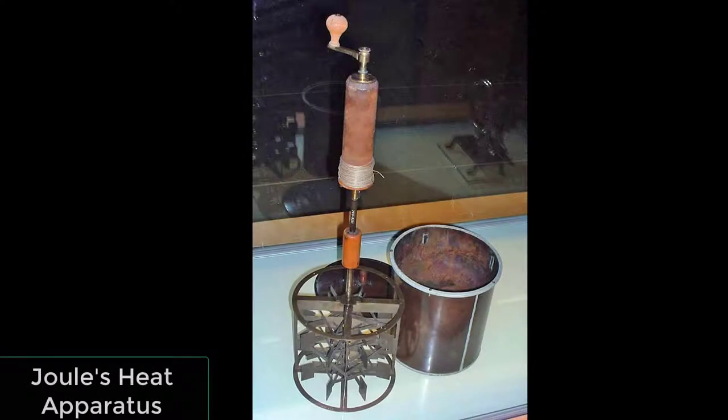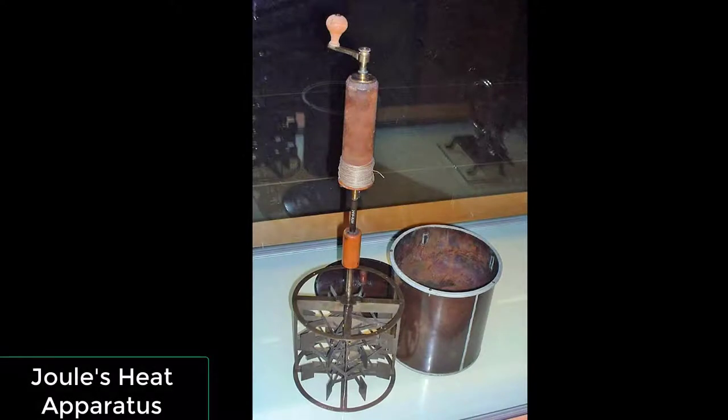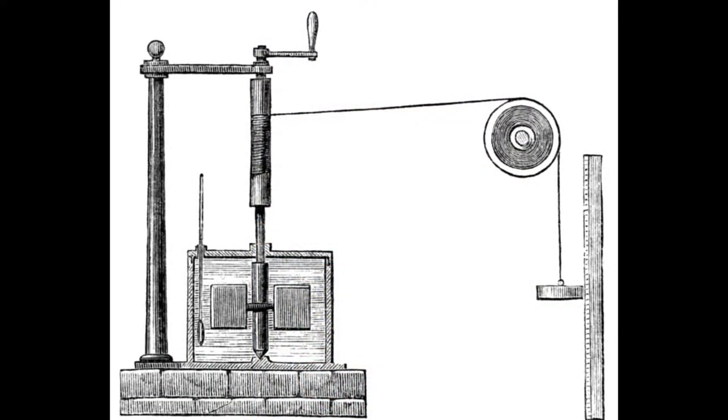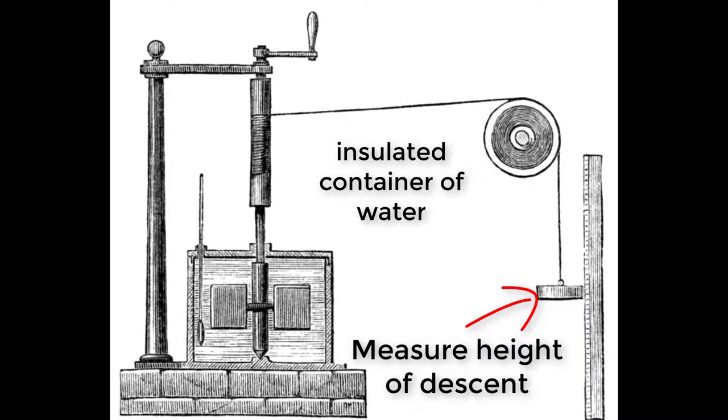Joule began his experiments in a laboratory in the family home. In 1841, he worked out how much heat an electric current generates. He experimented with converting mechanical movement into heat, and developed an experiment in which a falling weight turns a paddle wheel in water, heating the water. By measuring the rise in temperature of the water, Joule was able to work out the exact amount of heat a certain amount of mechanical work would create.